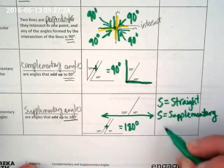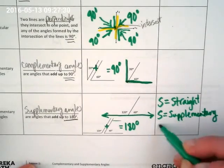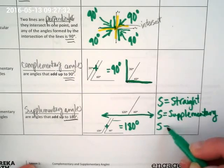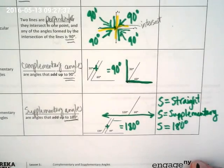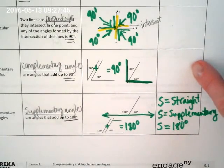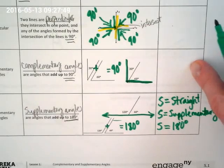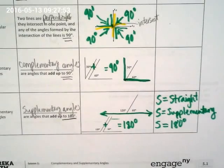Okay. And if S equals straight, then we get our straight line. Supplementary, it adds up to what number? So S is the starting letter for the angle that equals 180 degrees. And now in your own words, I want you to tell me something about complementary to help you remember the difference between complementary and supplementary.